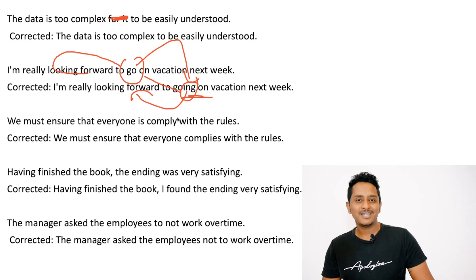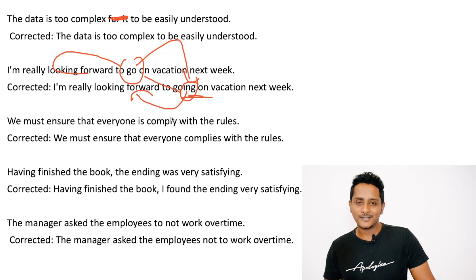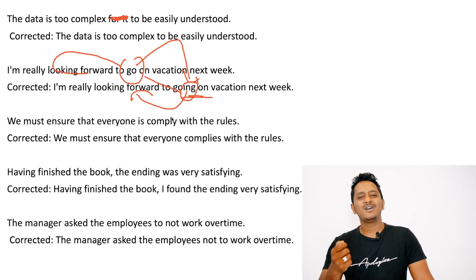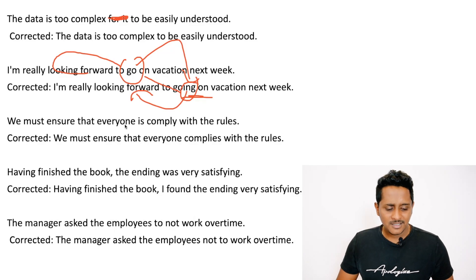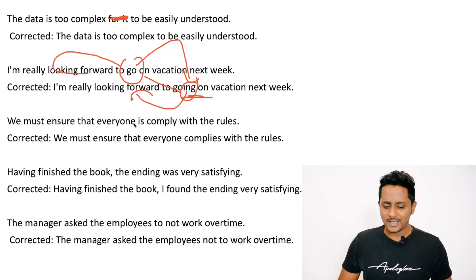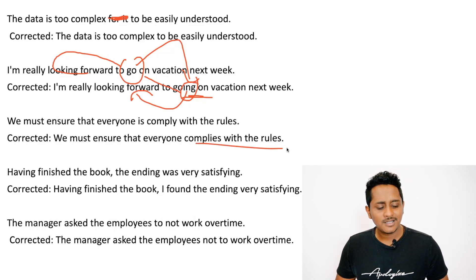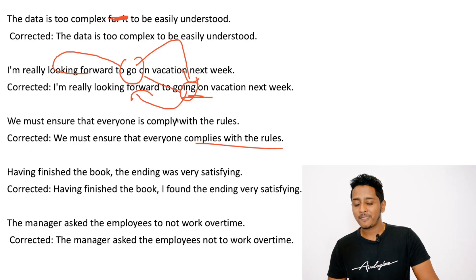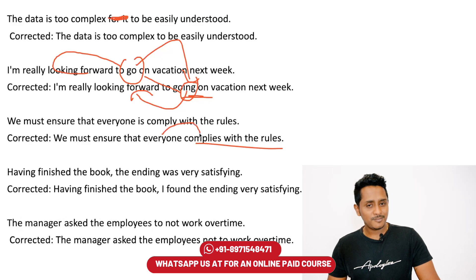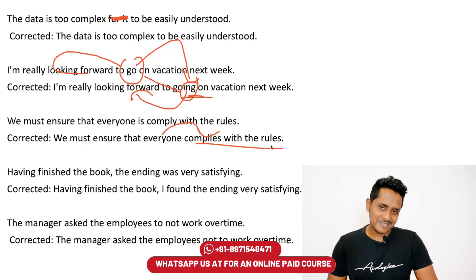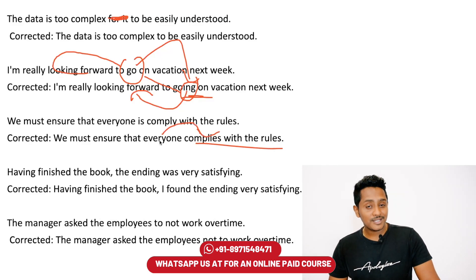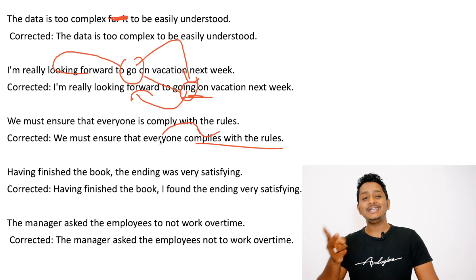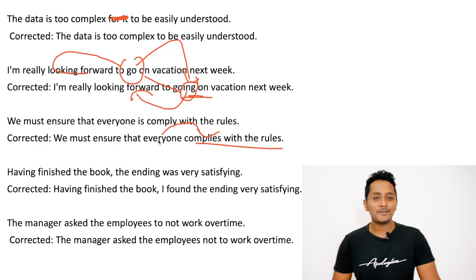'We must ensure that everyone is comply with the rules' — whenever you have a fact or rule, simply put it in the present tense. 'We make sure that everyone complies with the rules.' 'Everyone is complying' is also wrong — always try to put it in the present tense. Everyone complies with the rules, not comply. Everyone is singular: everyone is happy, he is, he eats, everyone eats, everyone complies. Subject-verb agreement applies.